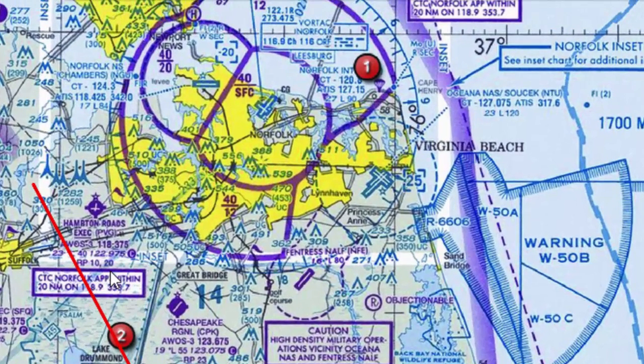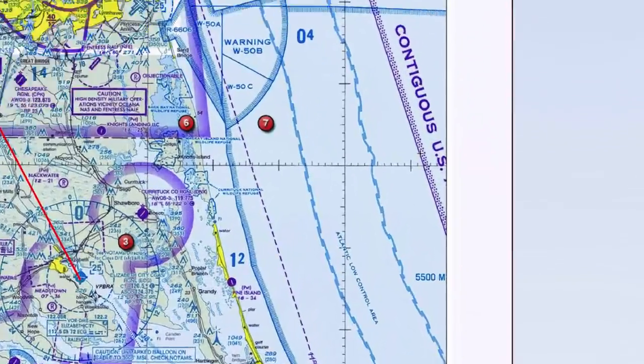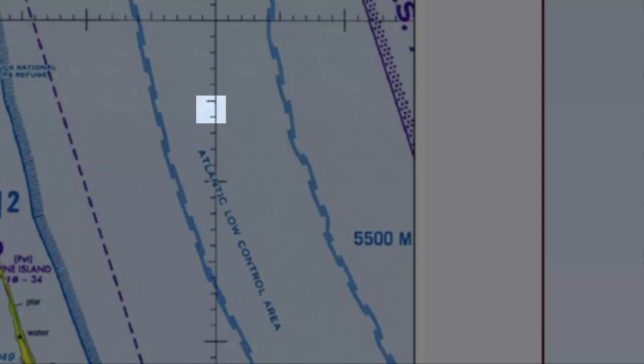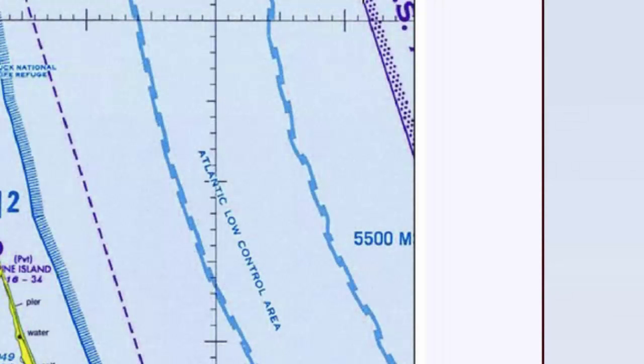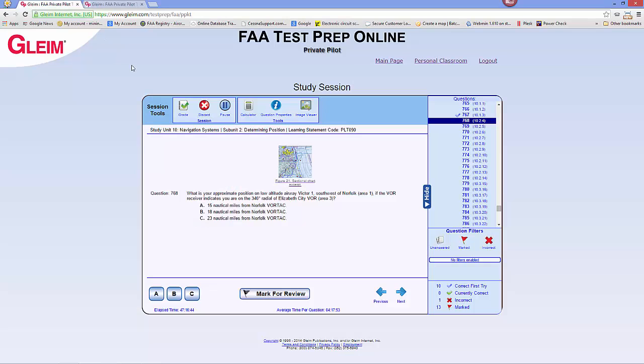Now that I've drawn the line, I need to measure the distance flown from the Norfolk VOR down to that intersection. I'll hold a piece of paper up to the chart, mark that distance on Victor 1, then compare it to my longitude lines — because every minute of longitude is one nautical mile. Reading this, the distance is 18 nautical miles.